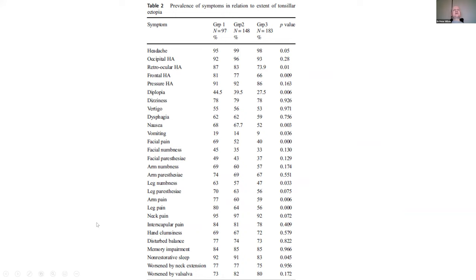The takeaway message for Chiari malformation is that if someone reports something that just isn't right and is particularly troublesome for them, you have to assume it's a Chiari malformation until proven otherwise. You cannot dismiss these patients — I've seen many patients dismissed by multiple practitioners who said their problems were not related to the Chiari malformation, and when they finally got the diagnosis confirmed and had surgery, they were so relieved that someone listened and tried to help them.